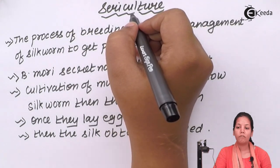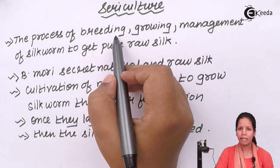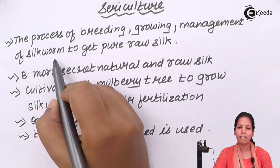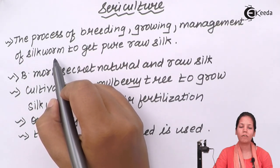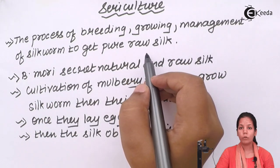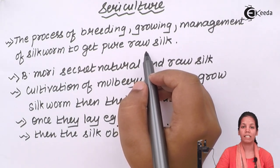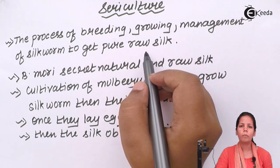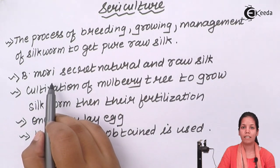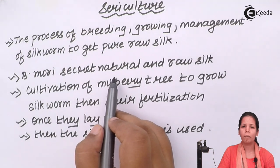Sericulture is the process in which breeding, growing and management of silkworms is done — insects that produce silk in the form of threads. Basically, the cocoon of the insects produces it and you get raw pure silk from them, which is later used in industries such as handloom or saree industries to make silk products. B. Mori is one of the silkworms available across India that secretes natural and raw silk of one of the best qualities.